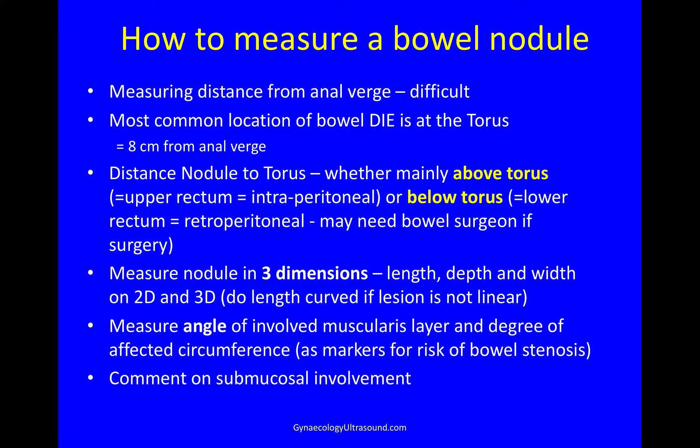How to measure a bowel nodule? A lot of people measure the distance from the anal verge, but this is very difficult. The most common location for bowel DIE is at the torus, and at that point you're around 8 centimetres from the anal verge. What we do in Southampton is measure the distance of the nodule to the torus — whether it's mainly above the torus, which is upper rectum and intraperitoneal, or whether the nodule is below the torus, which is lower rectum and retroperitoneal. This is where bowel surgery can be very difficult, and people often use a bowel surgeon for endometriosis surgery in this area. We then measure the nodule in three dimensions — length, depth and width — on 2D and on 3D, and it's important to measure the length of a lesion as a curved line if the lesion is not linear.